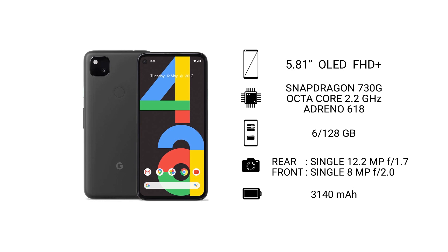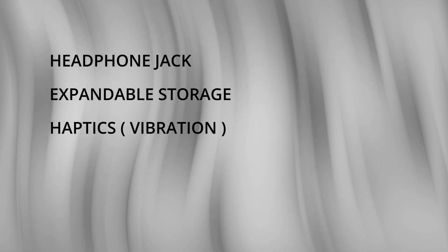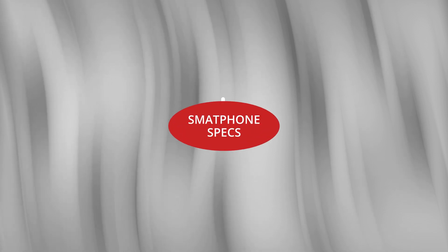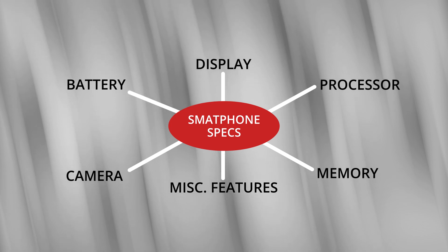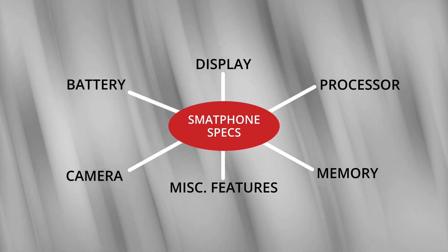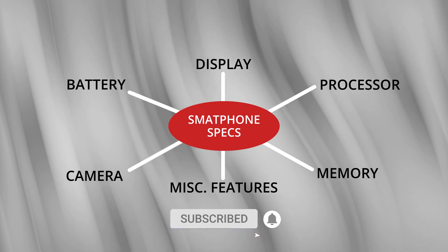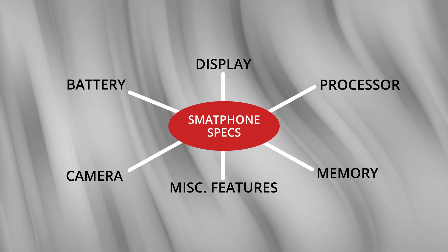Now that we've covered all the main aspects of a phone, you might also want to look for some subtle features that can make your smartphone experience a whole lot better, like a headphone jack, expandable storage, good graphics, and your OS version. Those were some of the most important aspects you should look into before choosing your phone. We'll be going into detail on each of these specs in our coming videos, so hit that subscribe button and turn on post notifications, and I'll catch you guys in the next one.